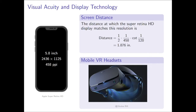At the current screen resolution, someone with 20-20 vision has to hold their device 1.876 inches away from their eye to be able to start seeing the resolution. Anything beyond that, and they lose the ability to distinguish between pixels.